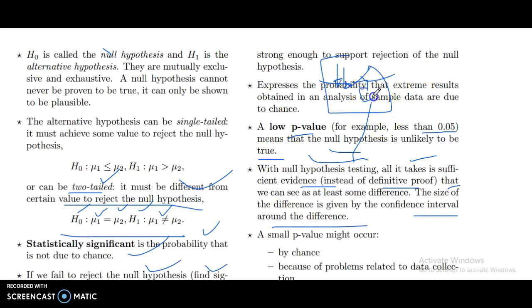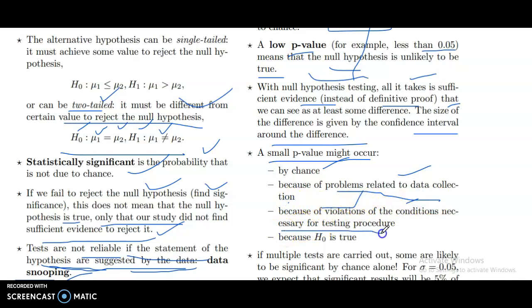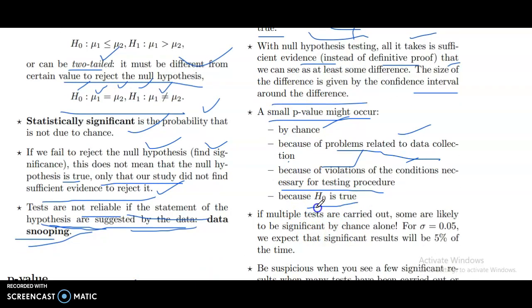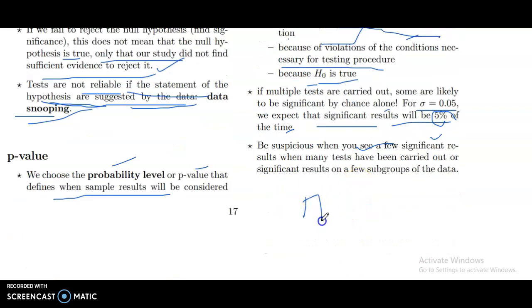A small p-value might occur by chance, because of problems related to data collection, because of violations of the conditions necessary for the testing procedure, or because H0 is true. If multiple tests are carried out, some are likely to be significant by chance alone. For alpha equal to 0.05, we expect significant results 5% of the time. Be suspicious when you see a few significant results when many tests have been carried out, or significant results only in subgroups of the data.